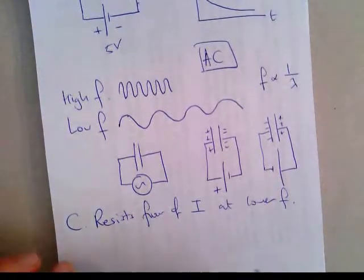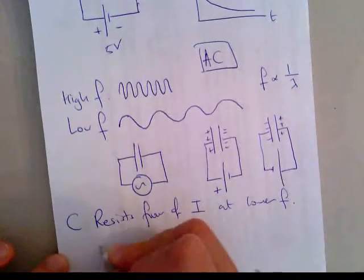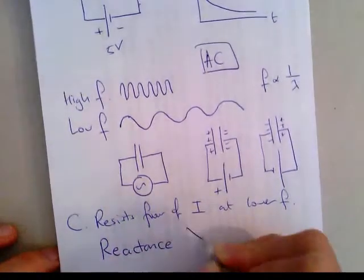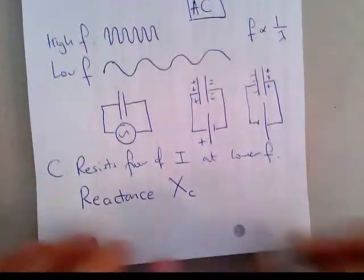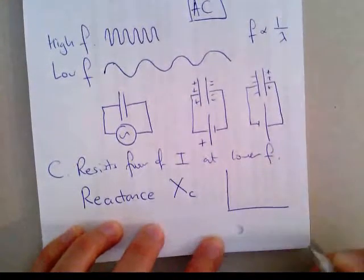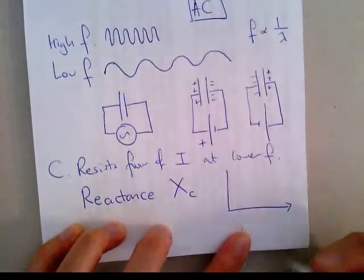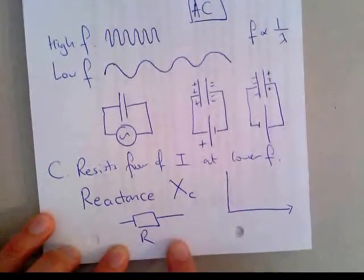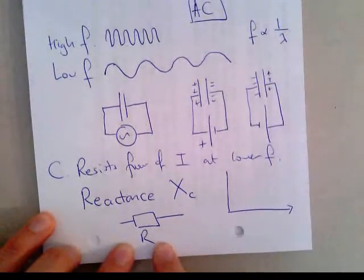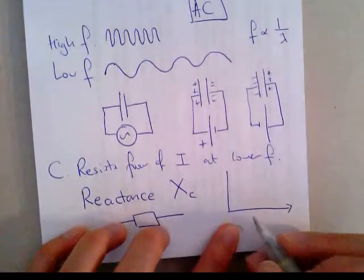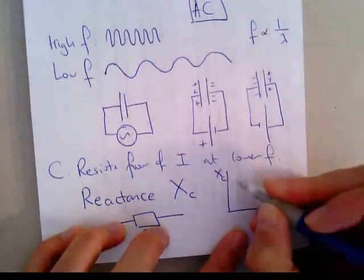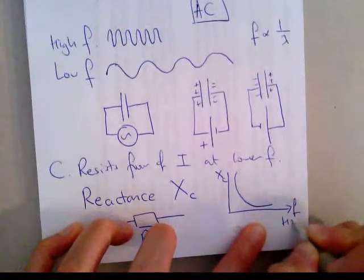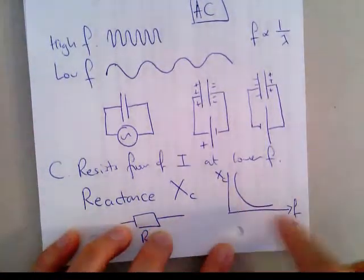This resistance to flow for a capacitor is known as the reactance, and it's given this symbol here. Because it changes with frequency — unlike a resistor, which has the same resistance regardless of the frequency of the signal — the reactance of a capacitor decreases with frequency in Hertz, and it has this sort of relationship here.